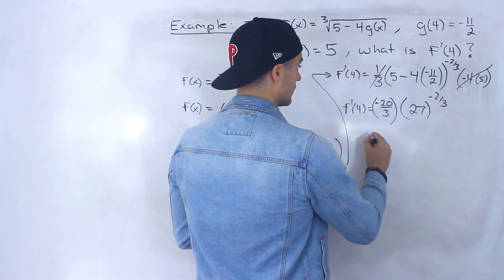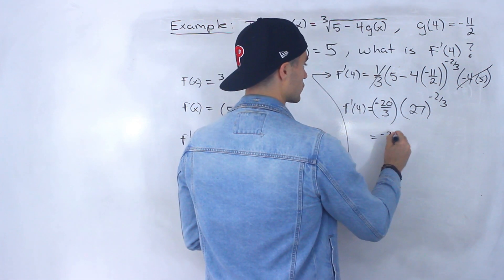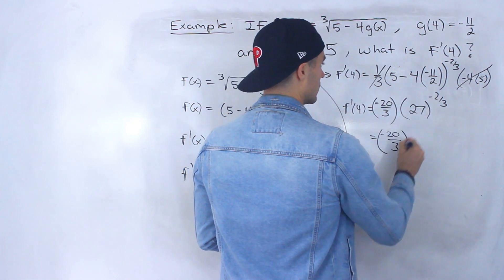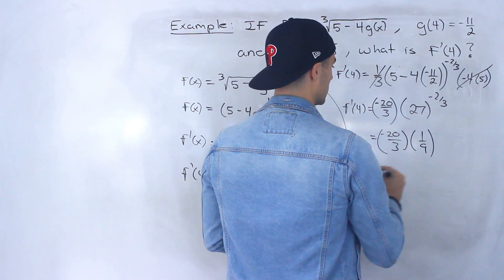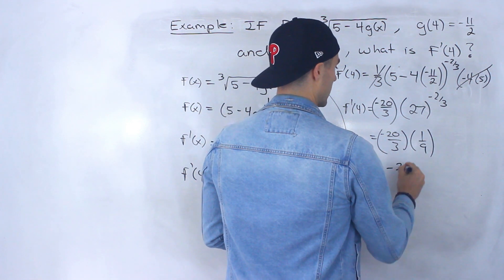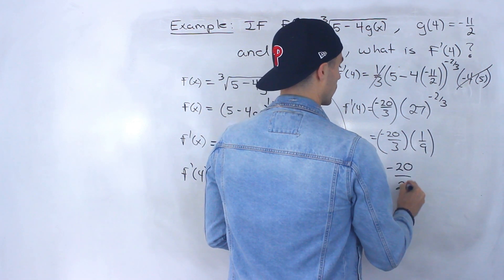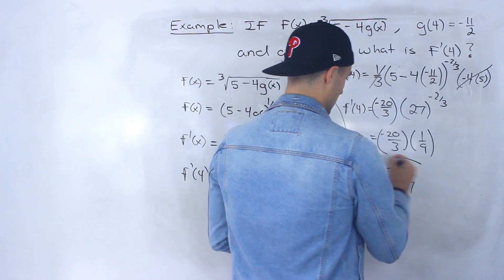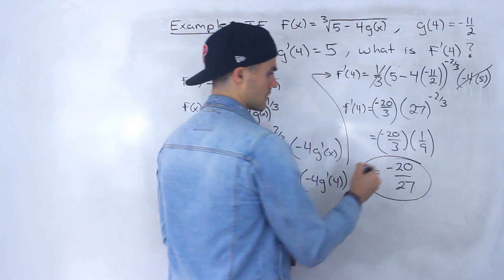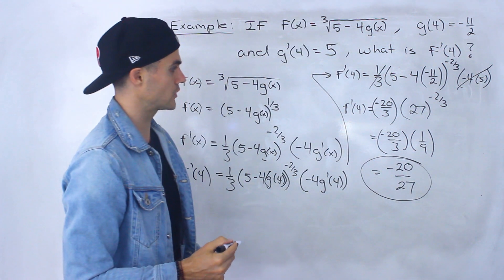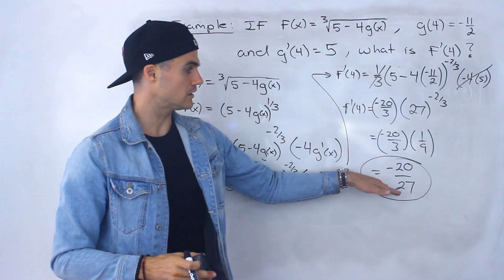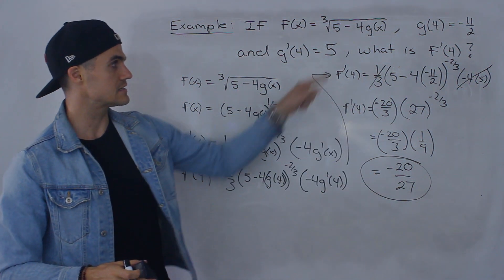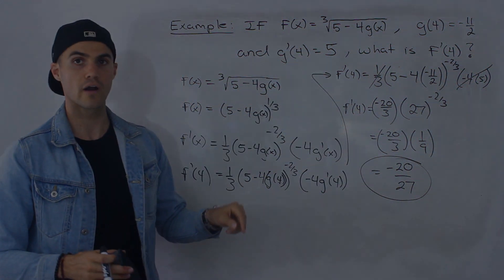Plugging that in, we have negative 20 over 3 times 1 over 9, which gives us negative 20 over 27. There's no further simplification of that fraction, so negative 20 over 27 is the answer for f prime of 4.